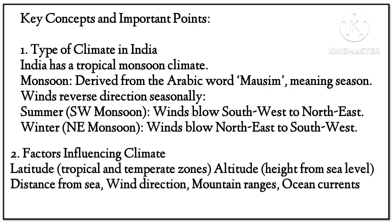Key concepts and important points: India has a tropical monsoon climate. 'Monsoon' is derived from the Arabic word meaning season — winds reverse direction seasonally. Summer winds blow southwest to northeast; winter northeast monsoon winds blow northeast to southwest. Factors influencing climate include latitude, tropical and temperate zones, altitude, height from sea level, distance from sea, wind direction, mountain ranges, and ocean currents.